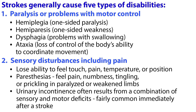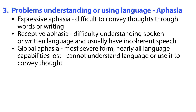Strokes generally cause five types of disabilities. The first and most common is paralysis or problems with motor control. This usually involves hemiplegia or one-sided paralysis, or hemiparesis or one-sided weakness; dysphagia or problems with swallowing; and ataxia, loss of control of the body's ability to coordinate movement, which causes problems with body posture, walking, and balance. Stroke patients may also have sensory disturbances, in which they lose the ability to feel touch, pain, temperature, or position. Some patients may experience paresthesias, in which they feel pain, numbness, tingling, or prickling in paralyzed or weakened limbs. Urinary incontinence often results from a combination of sensory and motor deficits, and is fairly common immediately after a stroke. At least one-fourth of all stroke survivors experience problems understanding or using language, called aphasia.